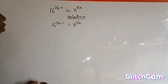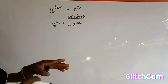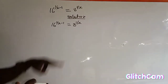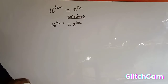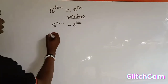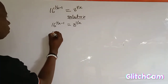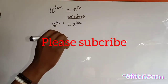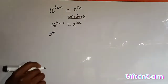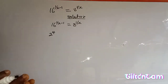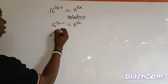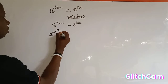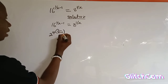You must ensure that when you have a question in this form, the bases are equal, so that we can eliminate the base and equate the powers. Now, 16 can also be written as 2 to the power of 4, because 2 multiplied by itself 4 times gives 16. I'll write the power 1 over s minus 1.